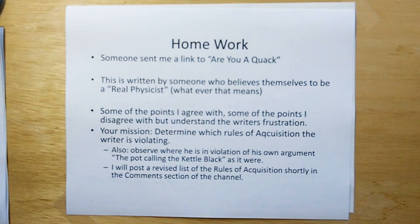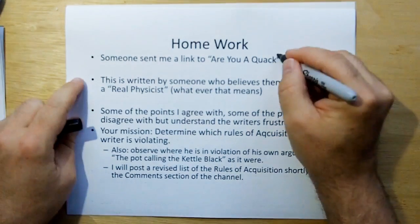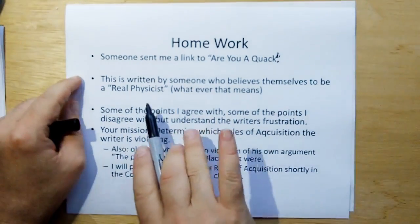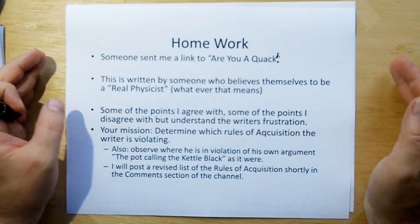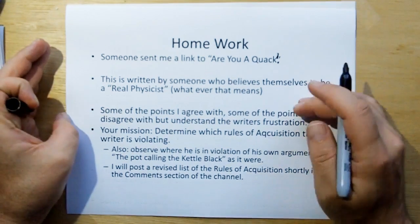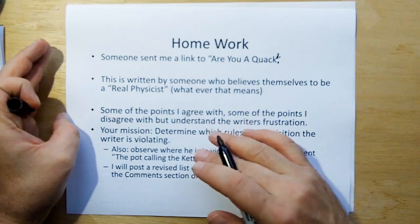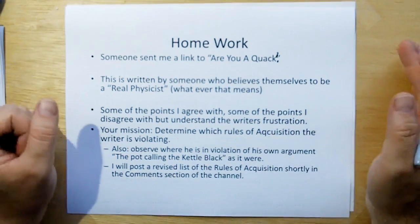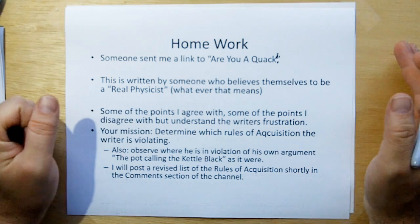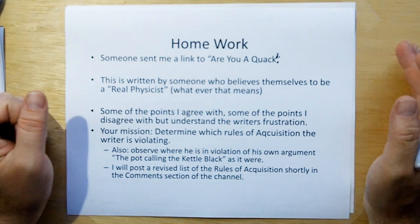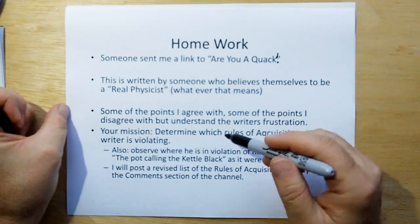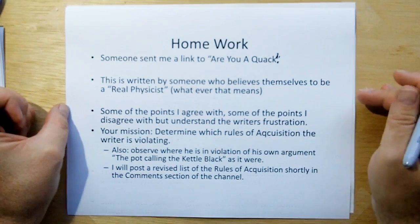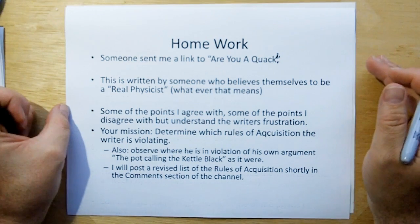You have homework. Someone sent me a link to, are you a quack? Well, I guess there's a question mark in there. This is written by someone who believes themselves to be a real physicist, whatever that means. I'm going to put the link up there once I post this. And some of the points with him I agree with, some other points I disagree with, but I understand the frustration this guy gets. Your mission, your task is to determine which rules of acquisition the writer is violating. Also, observe where he's in violation of his own argument. In other words, a case where the pot is calling the kettle black.